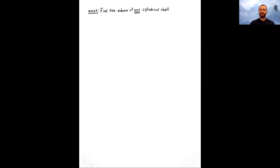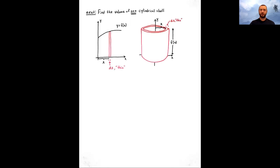Delta x in the limit passes to dx. Our starting place is to find the volume of one cylindrical shell. The thought is: if we can find the volume of one of these approximating pieces, we then sum all of them up, and that summing turns into an integral formula. Let's take a look at a visualization.